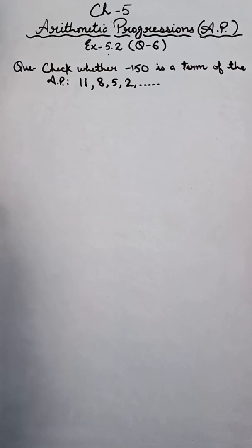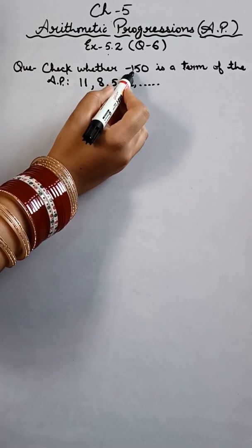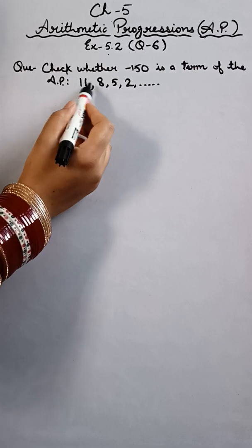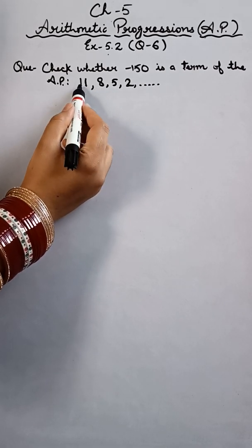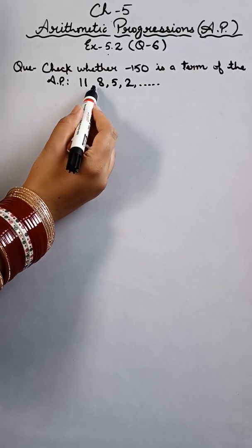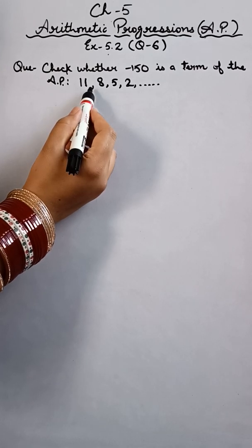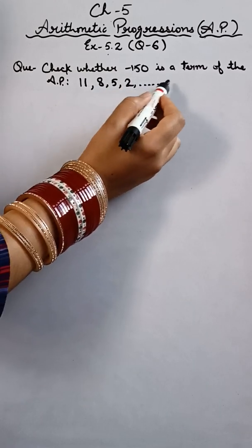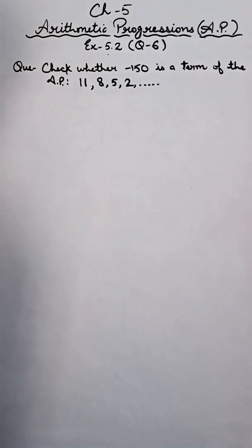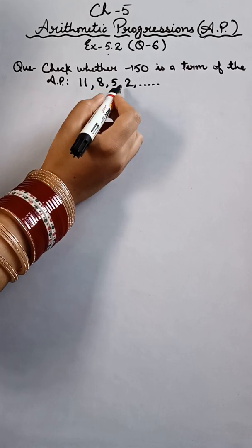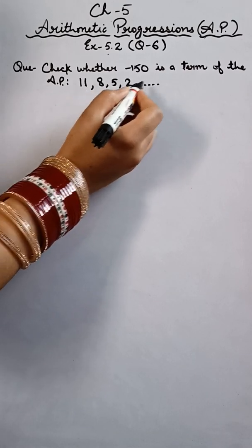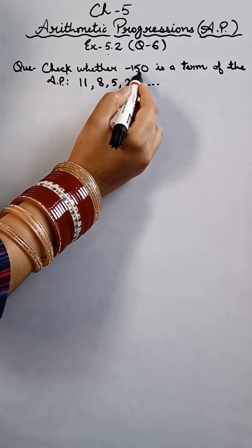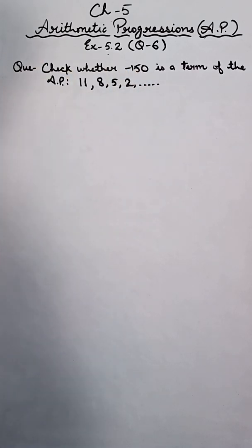So now what is the question here? Check whether minus 150 is a term of this AP. We have an AP given. We can find out the first term and the common difference. We have to check if minus 150 is a term in this AP. This is decreasing order, so minus terms will come. But we need to check if it actually appears.